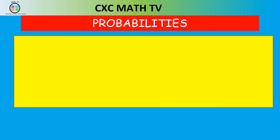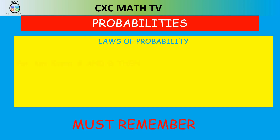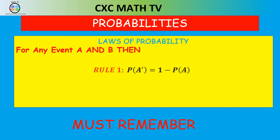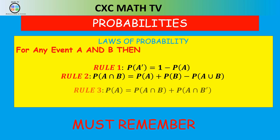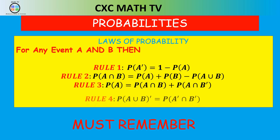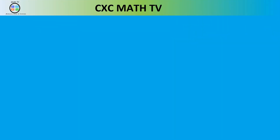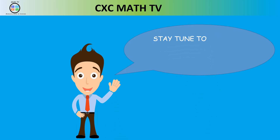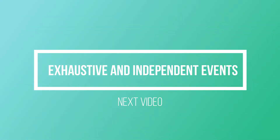These are the laws of probability we covered: rule one, the complement law — probability of A complement equals 1 minus probability of A; rule two, the intersection law — probability of A intersect B equals probability of A plus probability of B minus probability of A union B; rule three — probability of A equals probability of A intersect B plus probability of A intersect B complement; and rule four, De Morgan's Law — probability of (A union B) complement equals probability of A complement intersect B complement. Stay tuned — in the next video we'll look at mutually exclusive and independent events. Take care, keep practicing, and have a blessed day.